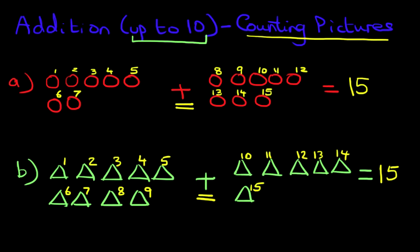So there are also 15 triangles. And when you are counting, when you are trying to add two digits up to 10, if they give you pictures in the question, it could be circles, it could be triangles, it could be squares, it could be pencils, it could be socks, whatever it is, simply count them.